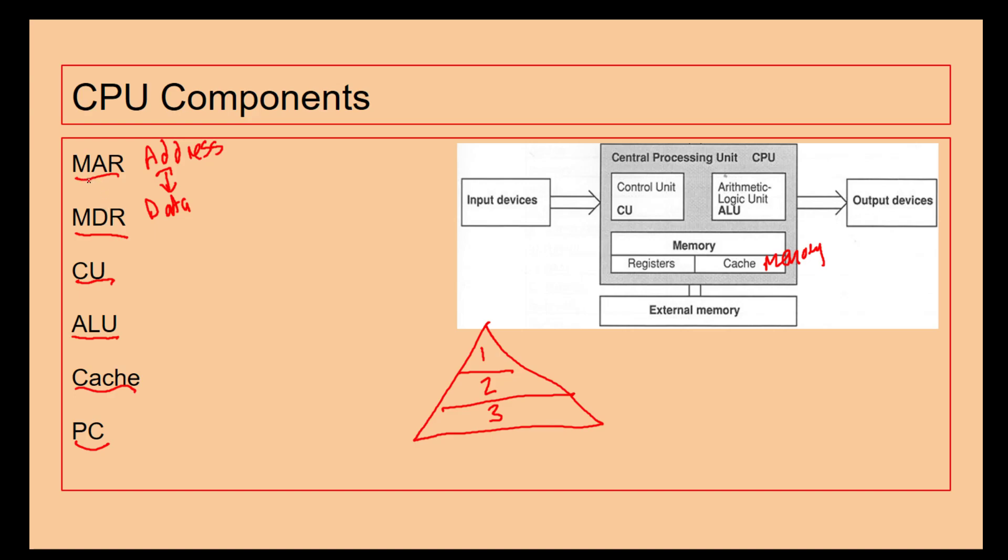So we've got the MAR and MDR. The MAR holds the address for the next instruction or the next piece of data to be found or used. The MDR holds the data itself. We've got the CU, the ALU being in control and doing the maths. We've got the cache being used as a storage type, as a type of memory inside there. And then finally we've got the program counter which does some incrementation.